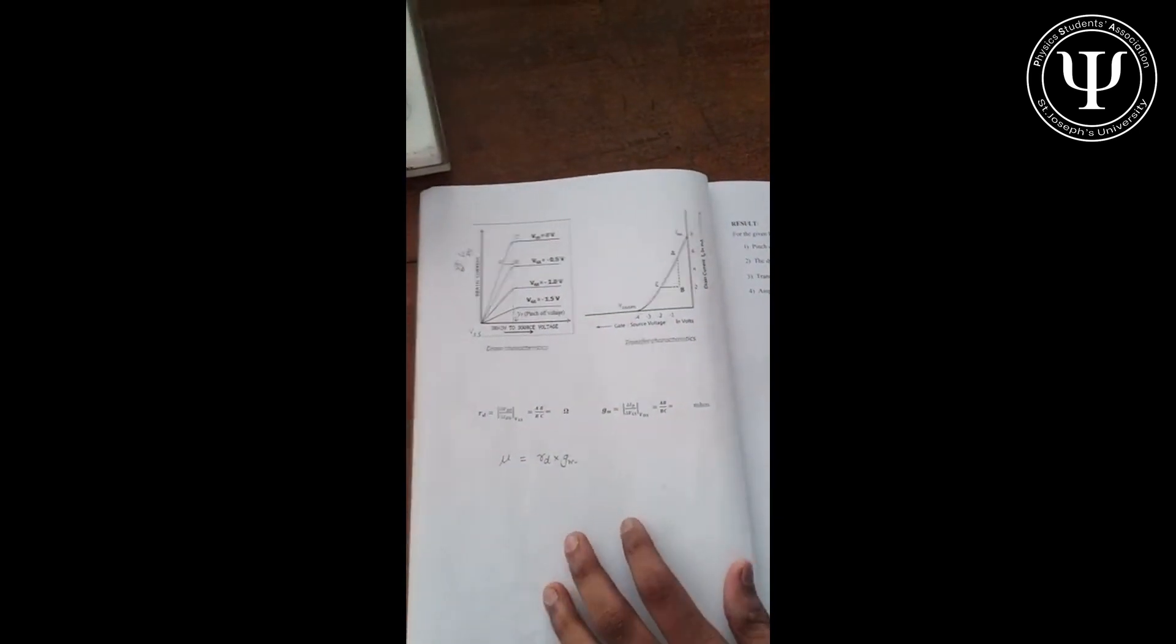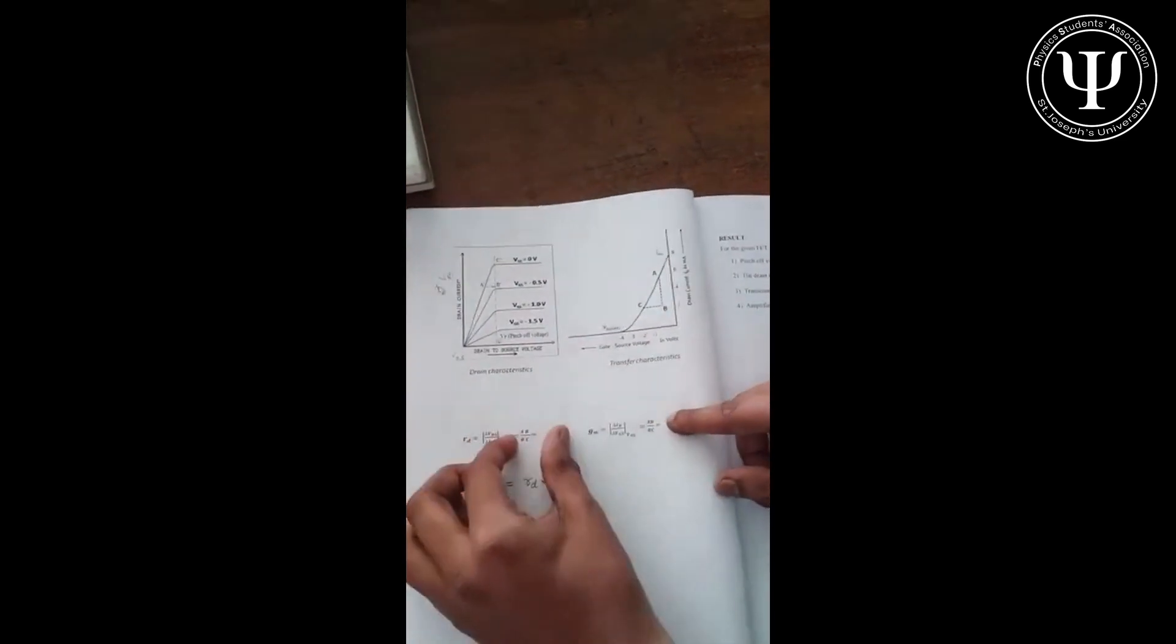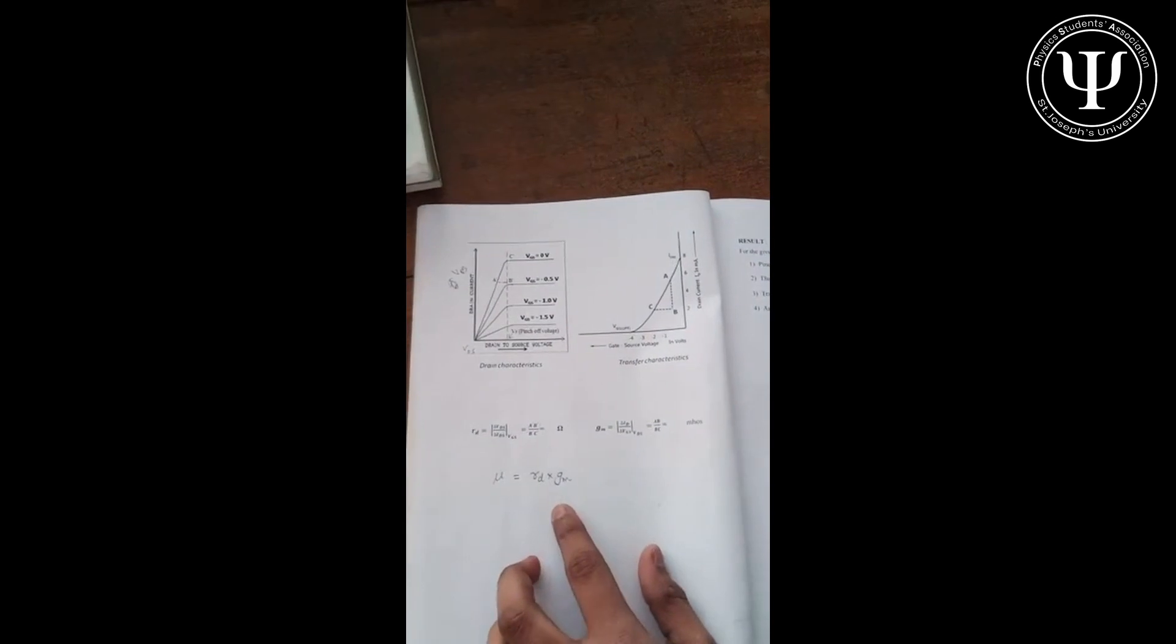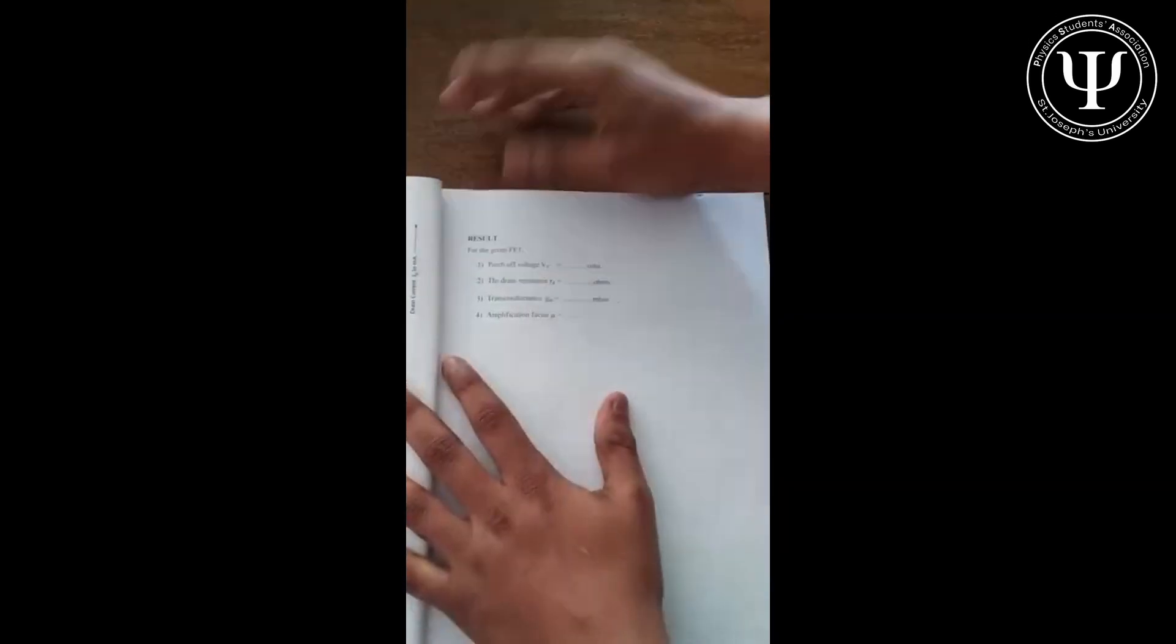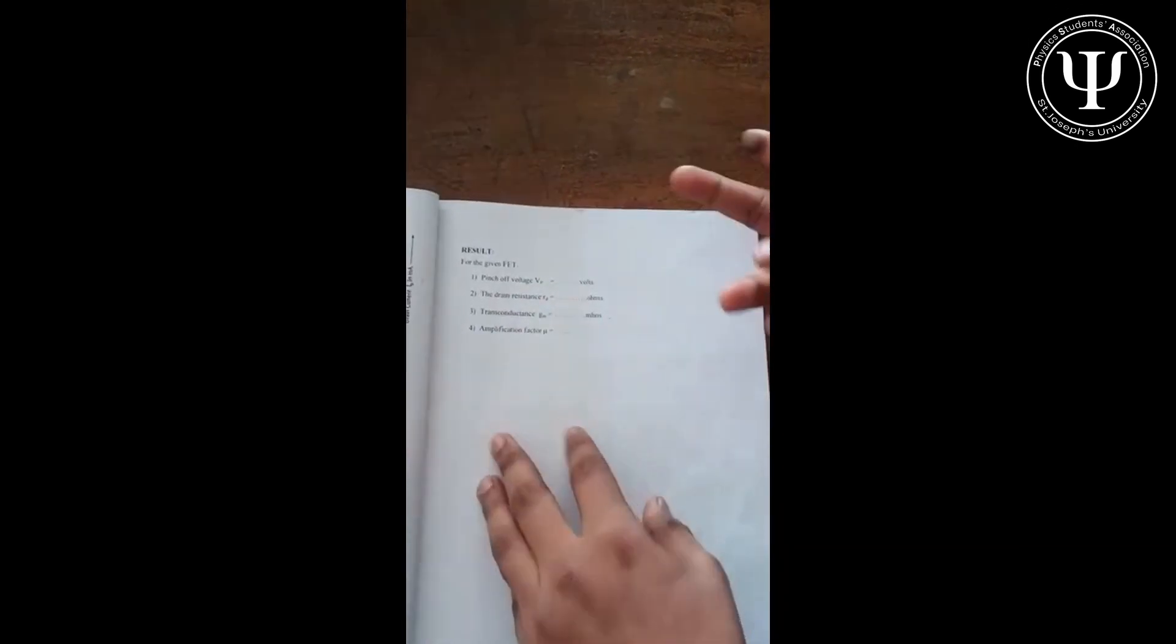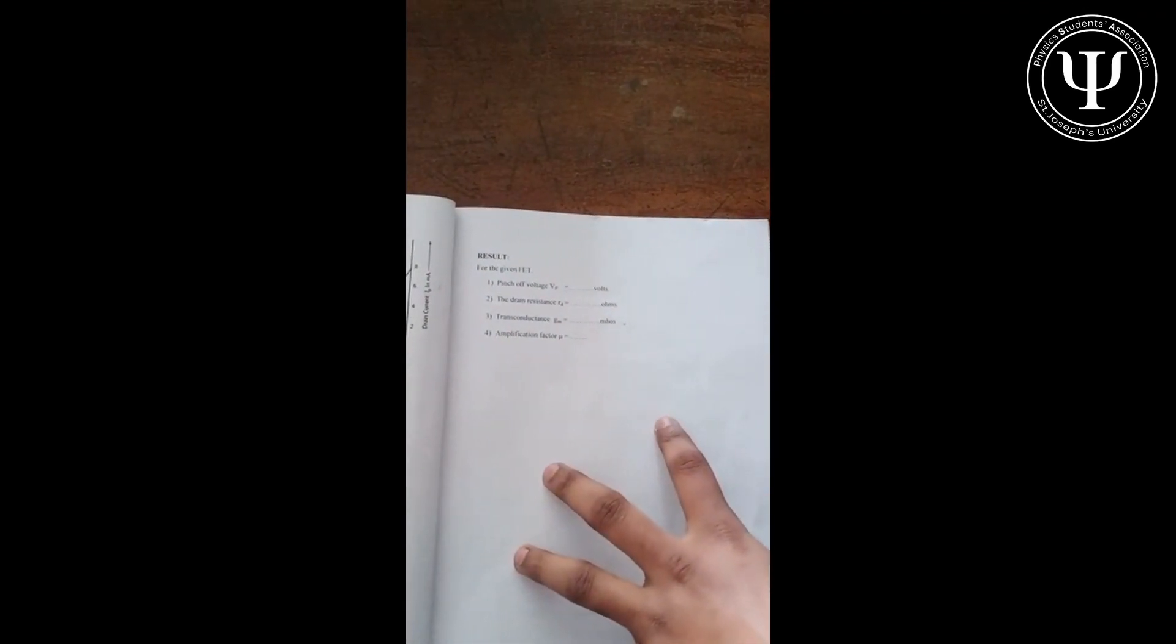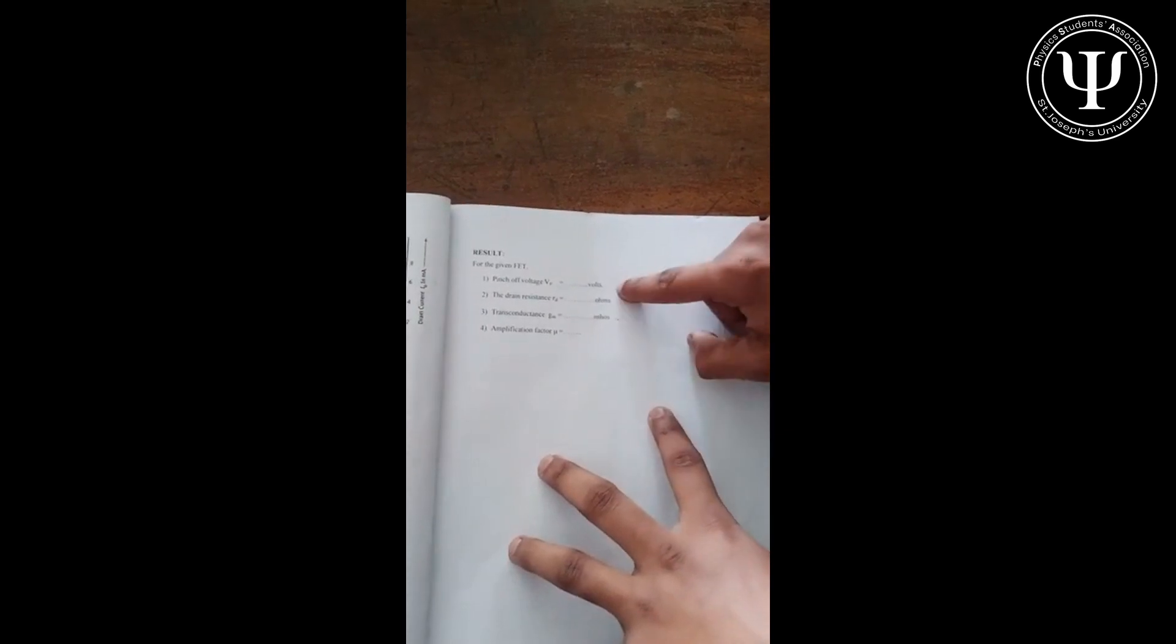And our fourth quantity, that is the amplification factor, is nothing but you just multiply these two factors that you obtained. You get your amplification factor, and you're done. Now in the result, when you're writing the result, you just write pinch-off voltage, drain resistance, transconductance, and amplification factor. Please don't forget to write the units for each.